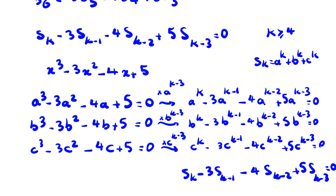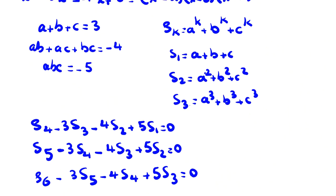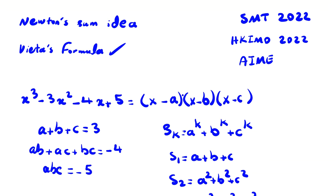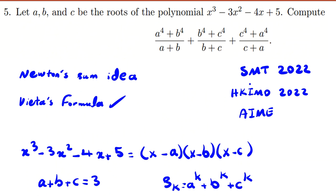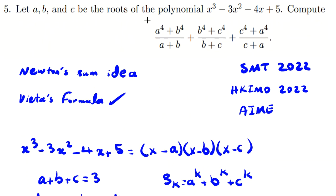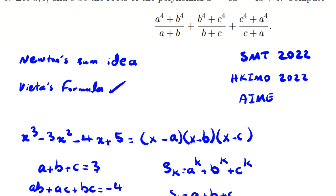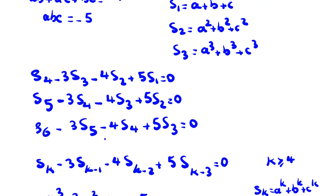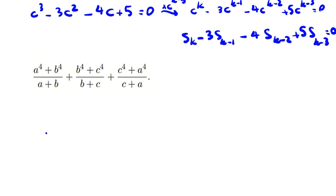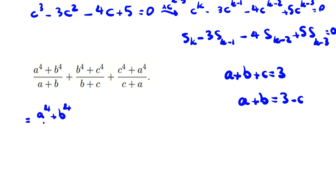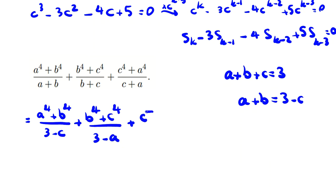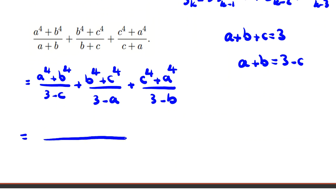Newton's sums is an important idea used in olympiad problems. Now let's set up the expression we want to find. In hard problems, focus on the structure and what exactly we want to compute. Here, using a + b + c = 3 and Vieta's results, we can write each term like a⁴/(a + b) by noting that a + b = 3 − c, so the sum becomes a⁴/(3 − c) + b⁴/(3 − a) + c⁴/(3 − b).